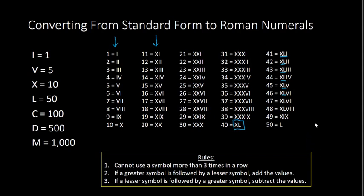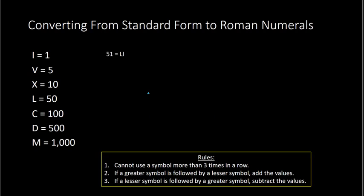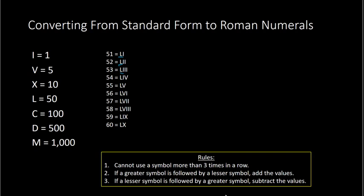From here we can do fifty-one through fifty-nine. For fifty-one through fifty-nine, we just put the L in the front and then one, two, three, four, five, et cetera. So fifty-one through fifty-nine: just put the L in the front for fifty, and then the number after. For sixty, sixty would be a combination of fifty and ten — so we take L for fifty and X for ten, put those together to get sixty. The L is in the front and X comes after, so we add because the greater symbol is followed by a lesser symbol: fifty plus ten equals sixty.